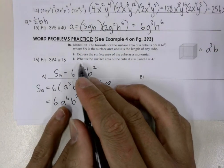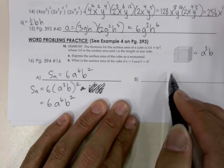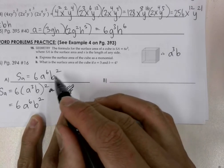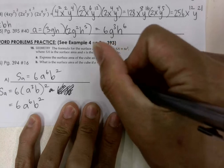Now, what's part B? What is the surface area of the cube if A is equal to 3 and B is equal to 4? Well, how do we do this? We'll go ahead and substitute in 3 for A and 4 for B and see what our surface area is.